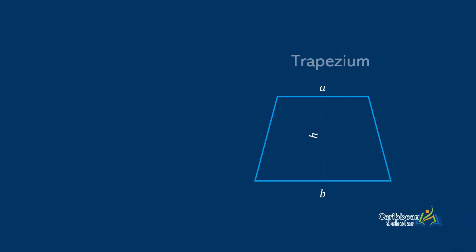And lastly, we have the trapezium. Its area is the average of the parallel lines times the height h.